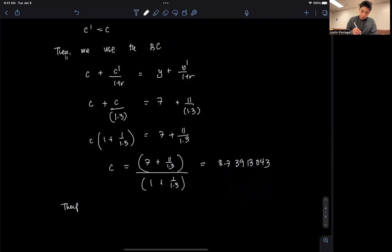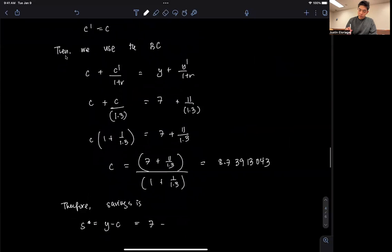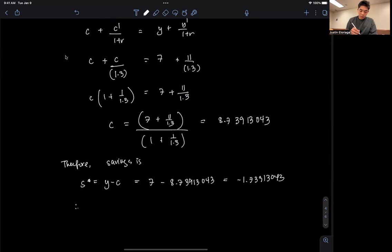Therefore, savings is, so S star equals Y minus C. So Y in this case in the first period is equal to 7, minus this term here is 8.73913043, and this is going to equal negative 1.73913043. Since this is a negative value, the household borrows, because in the first period they consumed more than they were endowed with, so they must have borrowed to finance that consumption.